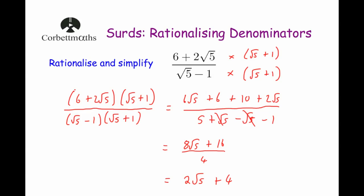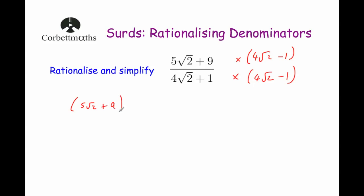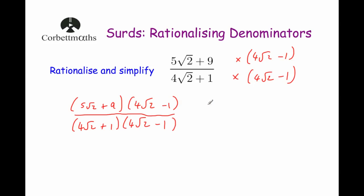Our last example: rationalize and simplify 5 root 2 plus 9 over 4 root 2 plus 1. Again, we're going to multiply both the numerator and the denominator by the conjugate of the denominator. Instead of 4 root 2 plus 1, we're going to multiply both the top and the bottom by 4 root 2 subtract 1. So we have 5 root 2 plus 9, in brackets, times 4 root 2 subtract 1, and on the denominator 4 root 2 plus 1 times 4 root 2 subtract 1.